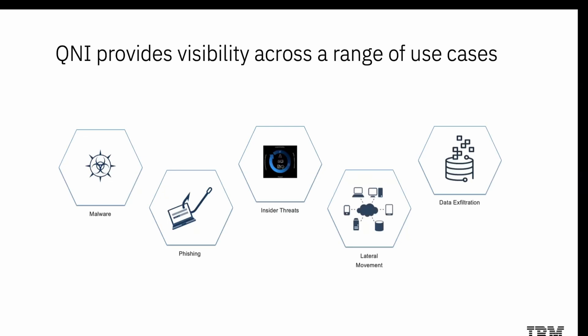QNI also detects lateral movement attacks. QRadar Network Insights can trace anomalous communications, reconnaissance, data transfers, and rogue or malicious actors. It also helps protect against data exfiltration. Data can be exfiltrated through many methods. Use QNI to identify and track suspicious files such as DNS abnormalities, sensitive content, anomalous connections, and aliases. Additionally, QNI allows for continuous monitoring of enterprise, industry, and regulatory compliance.